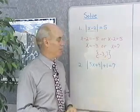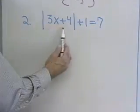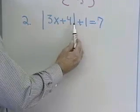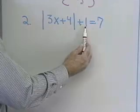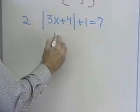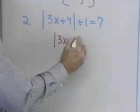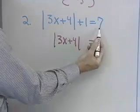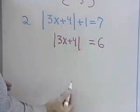Let's look at our next example. Before I solve this equation, I need to isolate this absolute value on one side of the equation. So I'll begin by adding negative 1 to both sides. That will give me the absolute value of 3x plus 4 is equal to 7 plus negative 1, which is 6.